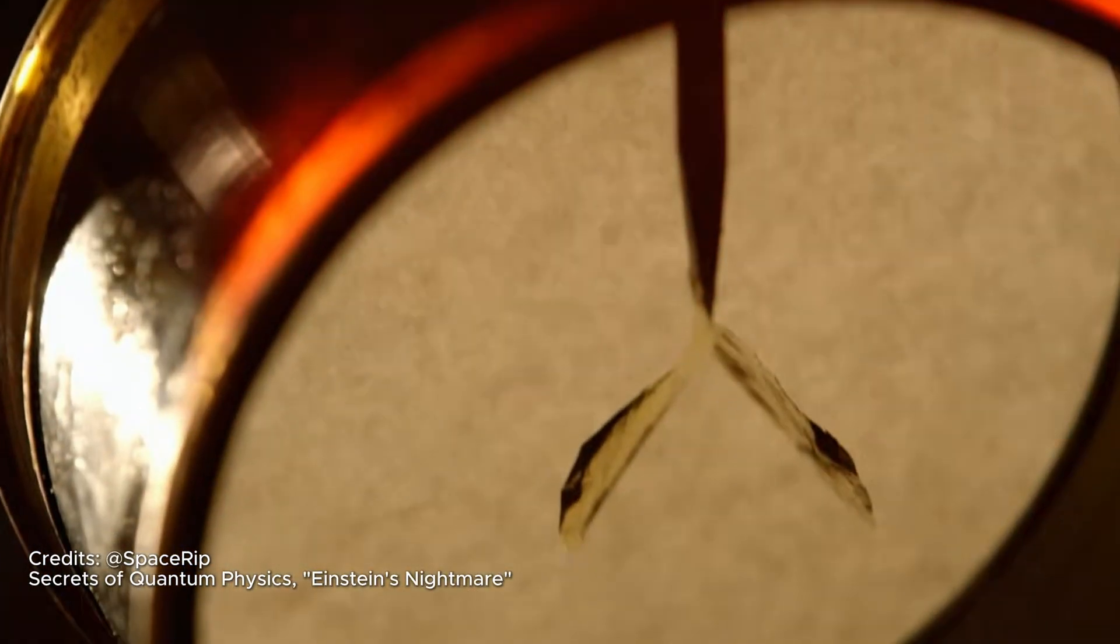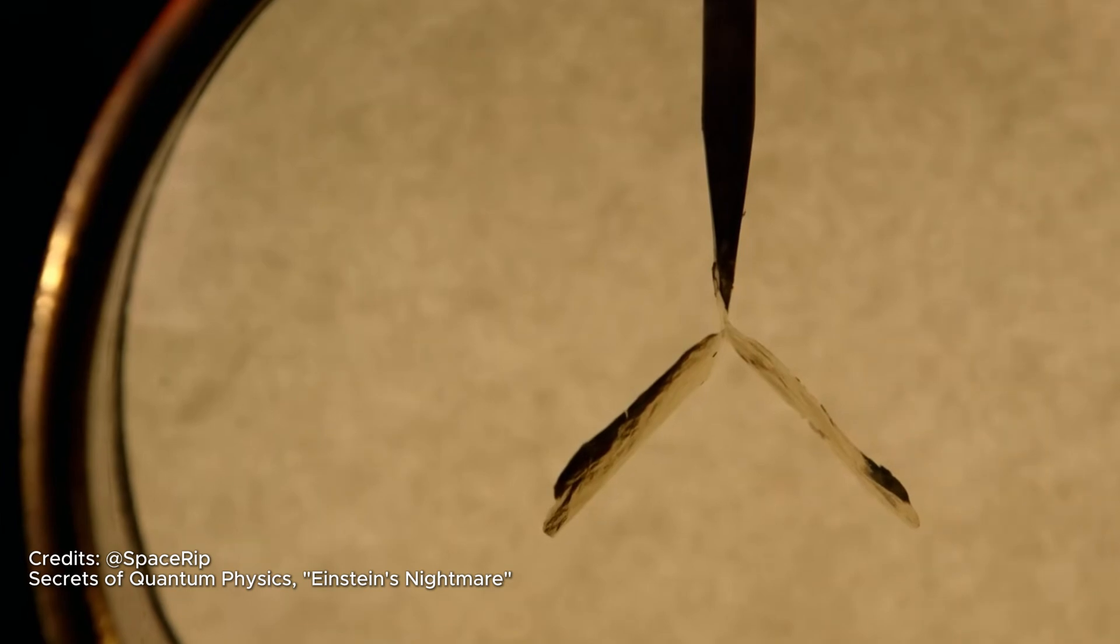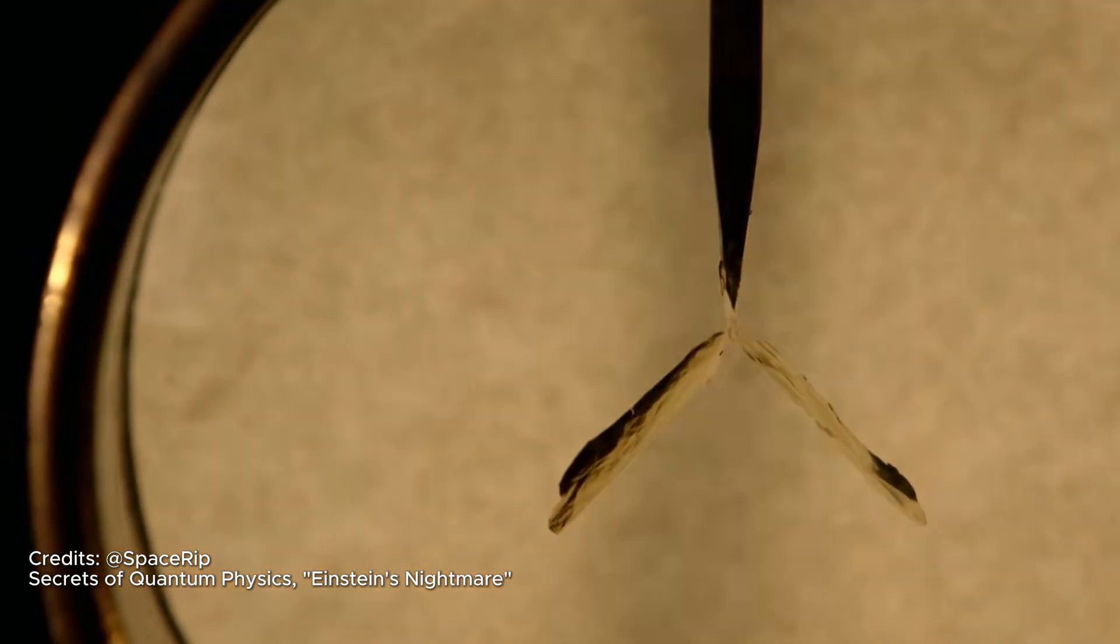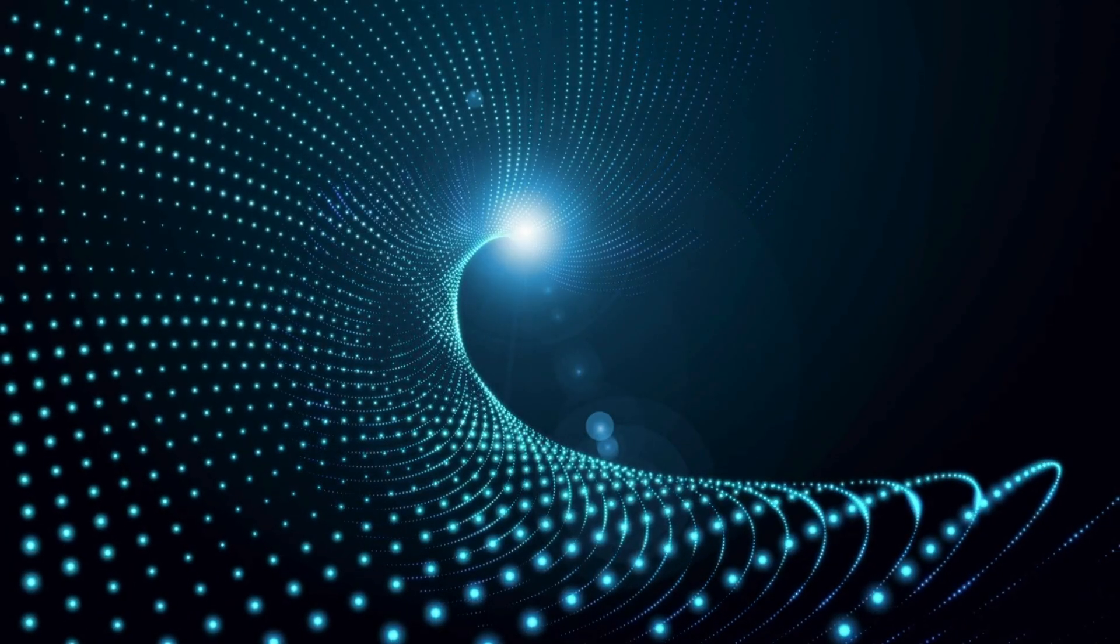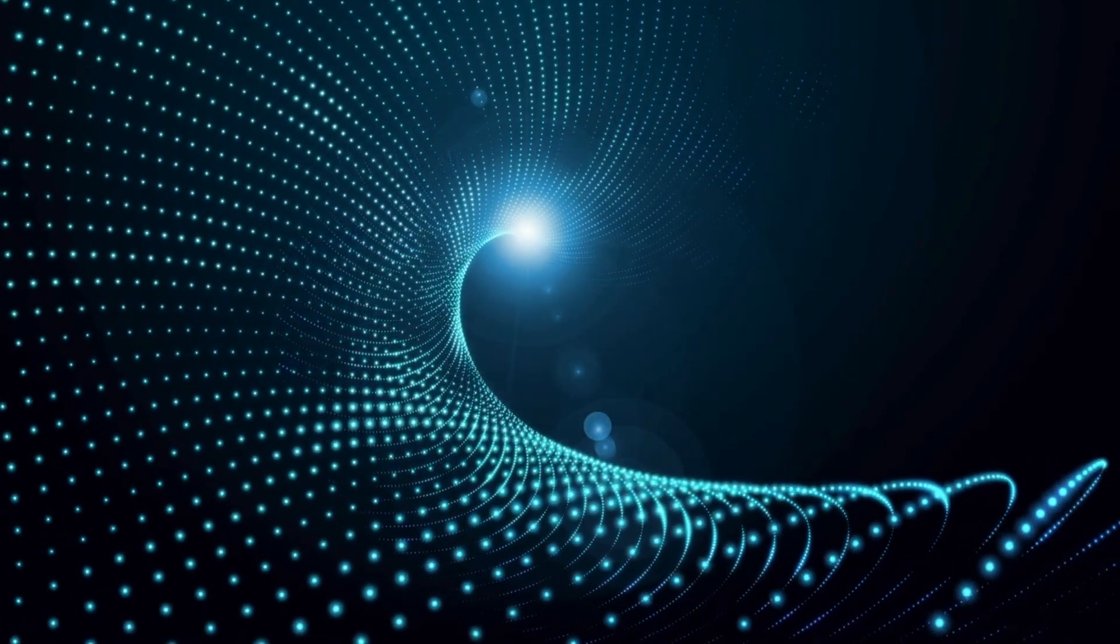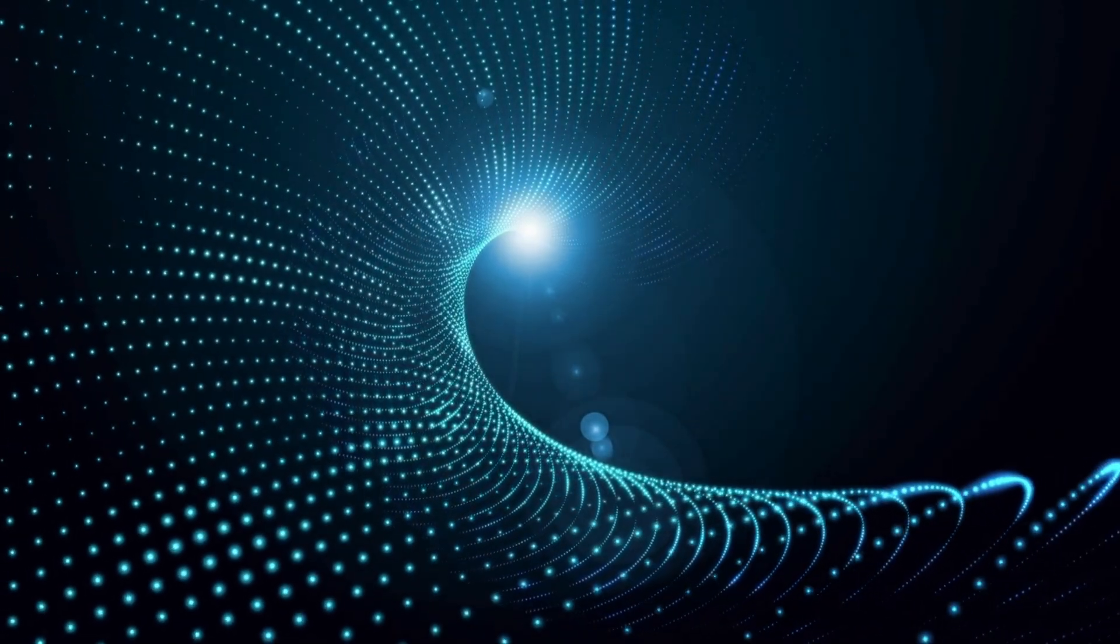But red light, no matter how intense, had no effect at all. This defied classical logic. If light is just a wave, increasing brightness should eventually knock electrons loose. But it didn't.